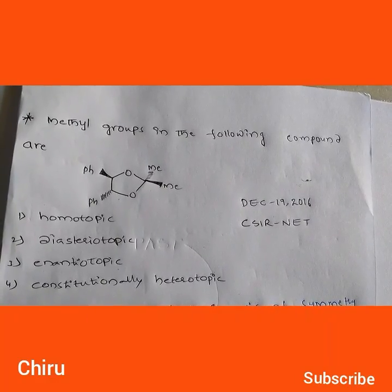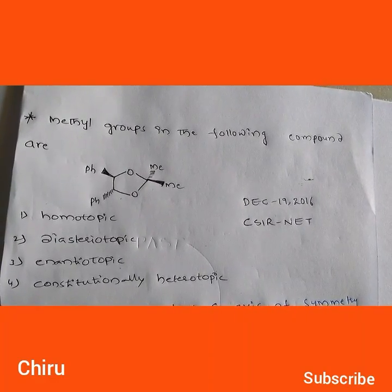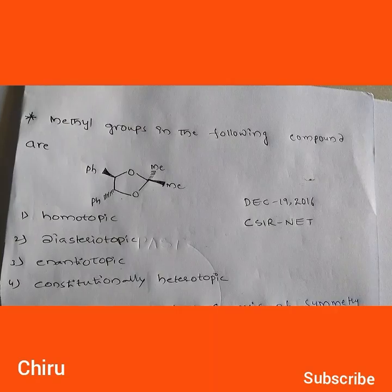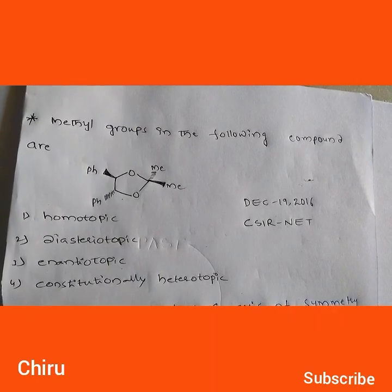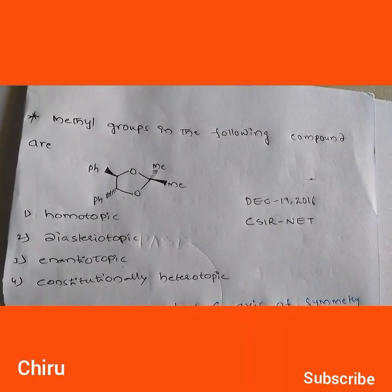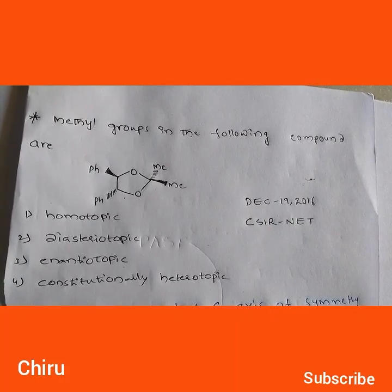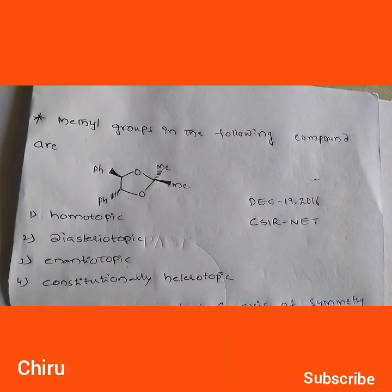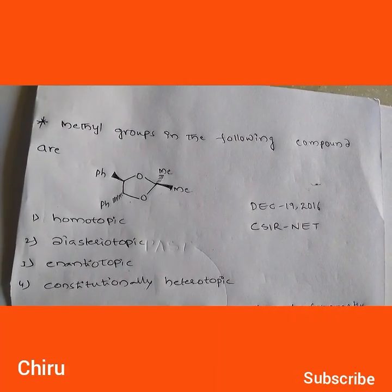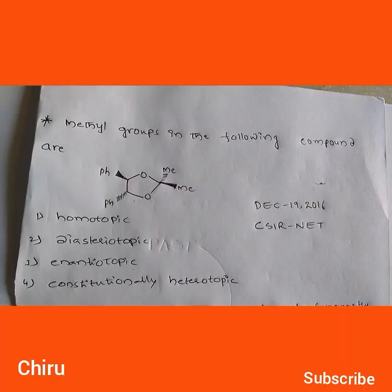The question is: methyl groups in the following compound are — look at the molecule or compound. The options are: first, homotopic; second, diastereotopic; third, enantiotopic; fourth, constitutionally heterotopic.